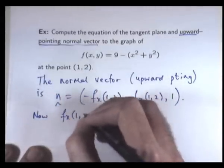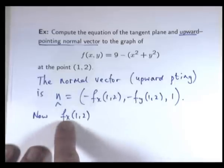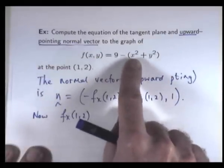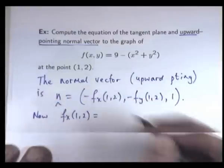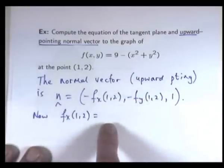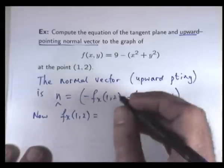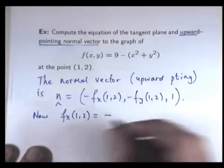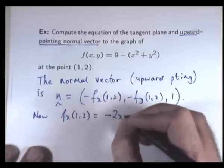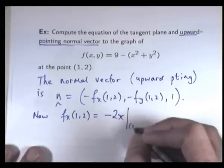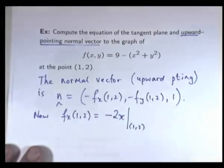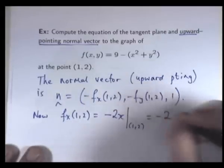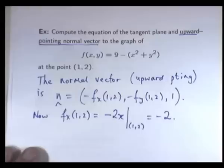So what is the partial derivative of f with respect to x at this point? Well, we go up here, we differentiate with respect to x, and imagine everything else is a constant. So if we differentiate with respect to x, we'll get minus 2x. And we want to evaluate that at x equals 1, y equals 2. So we plug that in, and we'll get minus 2.